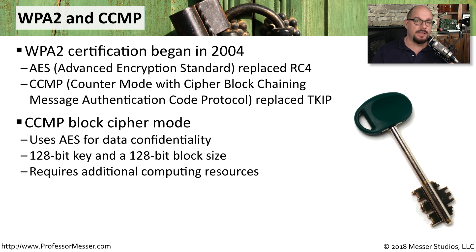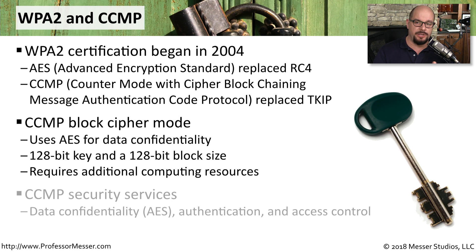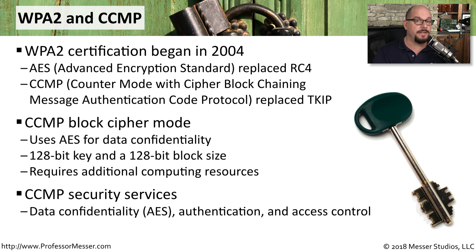CCMP is a block cipher mode that uses 128-bit keys and encrypts in 128-bit block sizes. This increased security came at a cost, however — some older hardware was not able to run this more advanced encryption scheme. These days, modern hardware is able to run WPA2 without a problem, and all of your wireless equipment should be using WPA2. It provides the data confidentiality you need for encrypted data, authentication, and the access control you need for your wireless network.